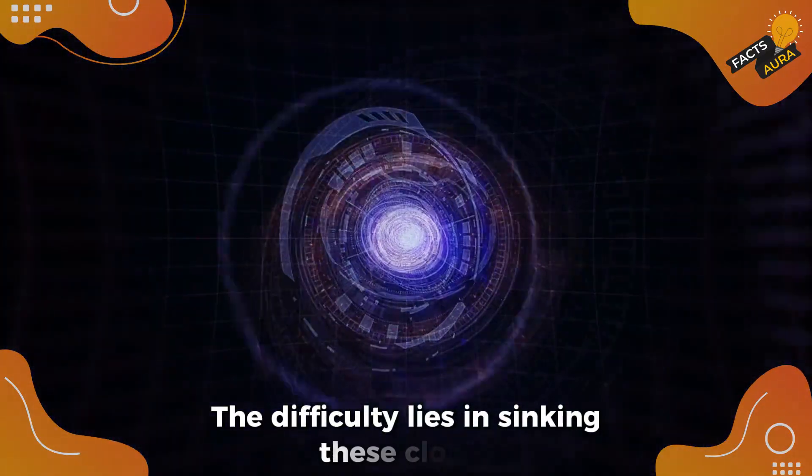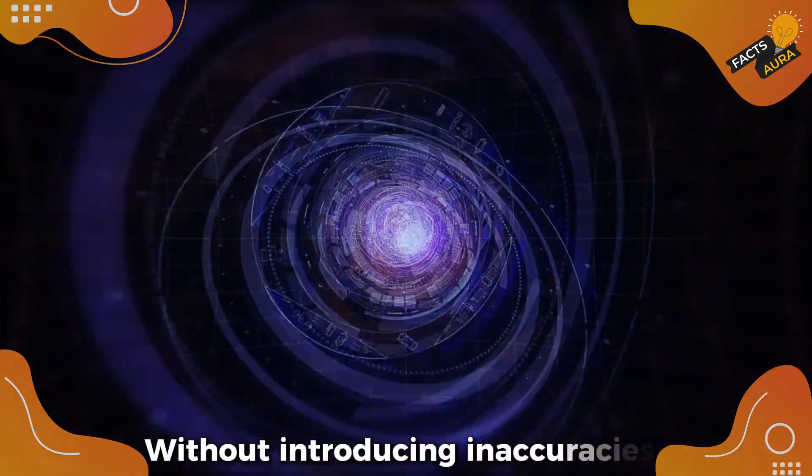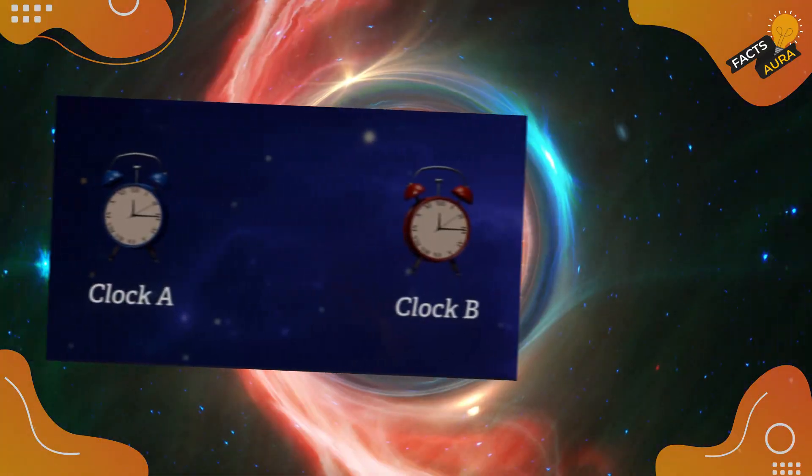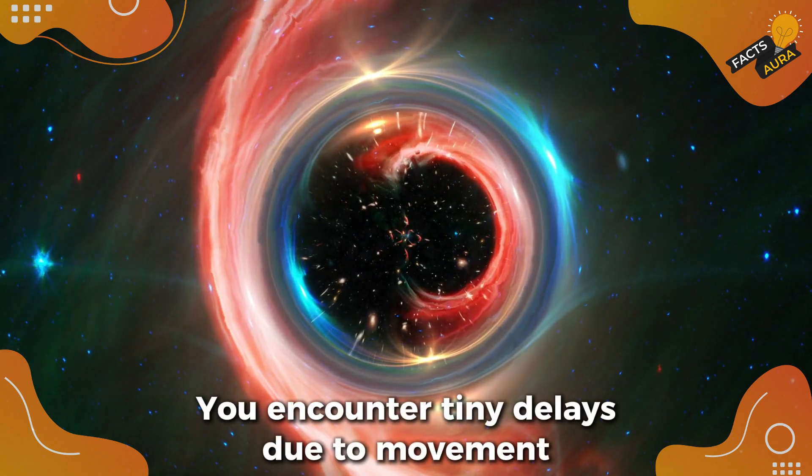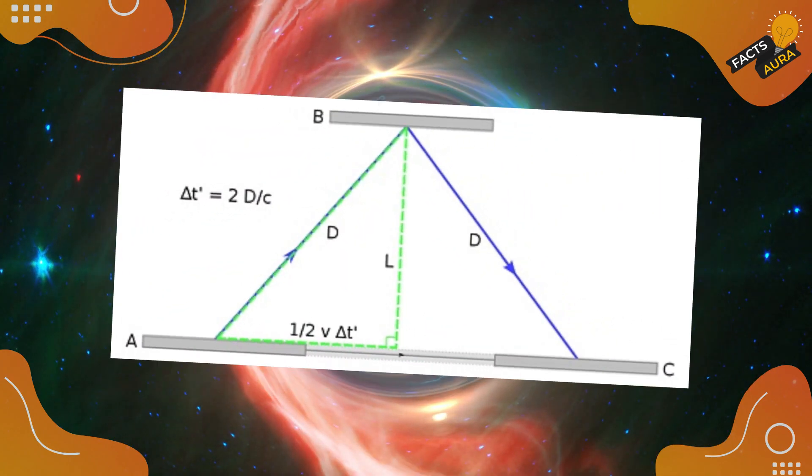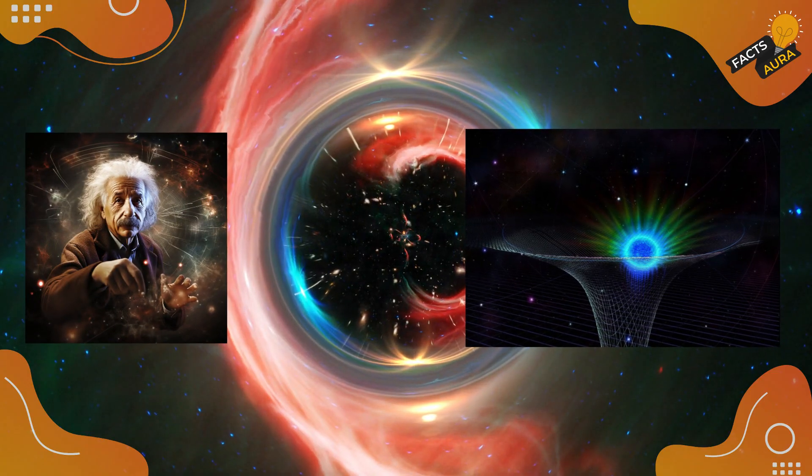The difficulty lies in syncing these clocks without introducing inaccuracies. If you try to synchronize them and move one clock to the second location, you encounter tiny delays due to movement, and even time dilation, an effect predicted by Einstein's theory of relativity.